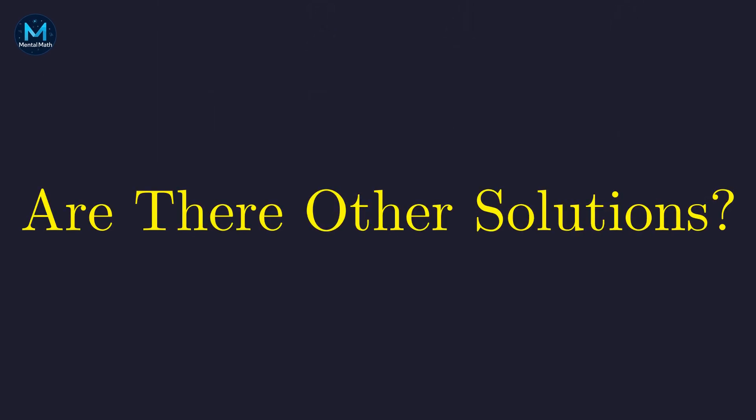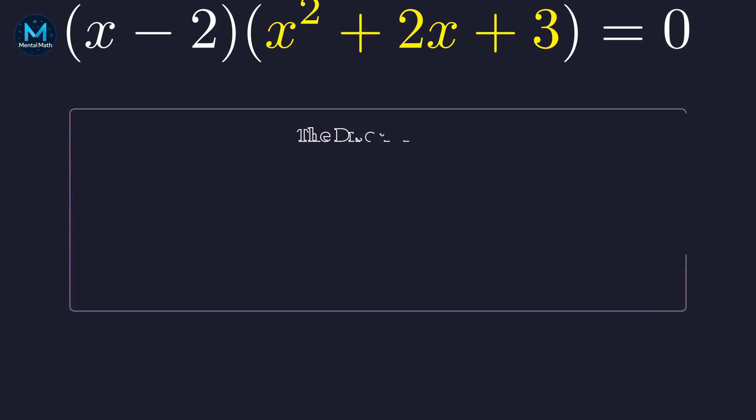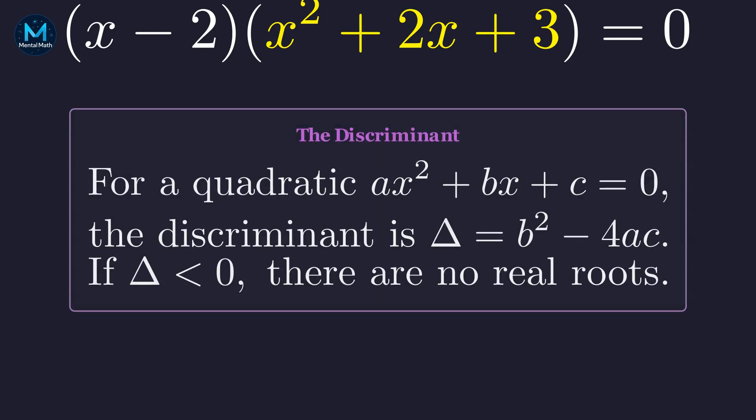Now, let's check the quadratic factor for any more real solutions. This equation is true if either x minus 2 equals 0, giving us x equals 2, or if this quadratic factor equals 0. Let's check for real roots. We can check this using the discriminant. For ax squared plus bx plus c equals 0, the discriminant is b squared minus 4ac. If it's negative, no real roots exist.